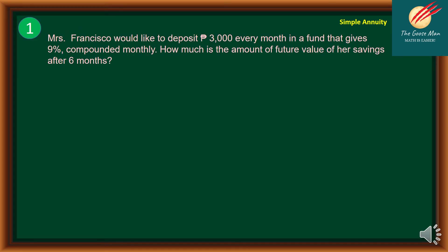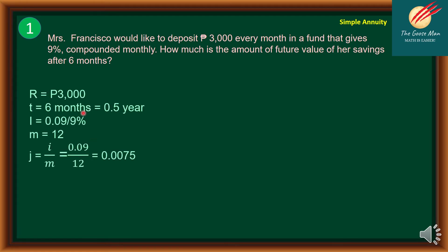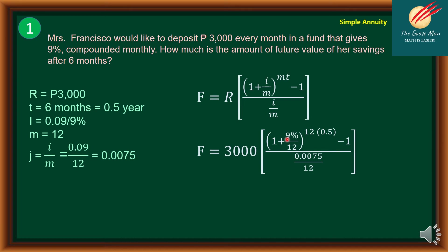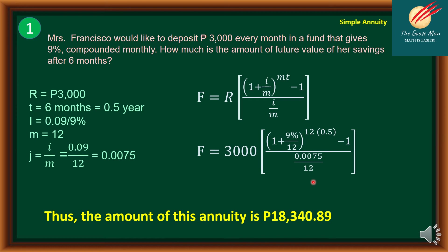Let's apply the formula to problem number 1. Recall: R = 3,000 pesos, T = 6 months or 0.5 year, nominal rate I = 9%, M = 12, and J = 0.0075. Substituting: F = 3,000 × [(1 + 9%/12)^(12 × 0.5) − 1] / (0.0075). Using a calculator, we get F = 18,340.89. This is the shorter way to solve compared to constructing the full cash flow diagram.